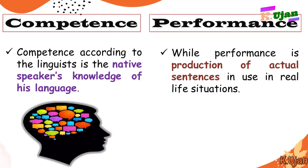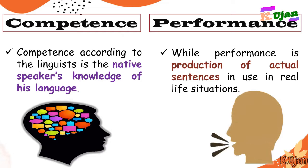While performance is the production of actual sentences in use in real life situations — that is known as performance. So the basic difference is: native speaker's knowledge of his language is competence, and the production of actual sentences, the production of actual language, is performance.